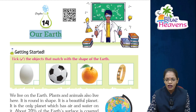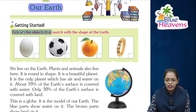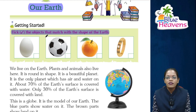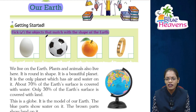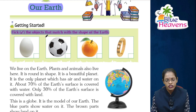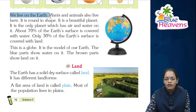Chapter 14: Our Earth. Get started — tick the objects that match the shape of the Earth. Look at the images and find those objects that are similar to the shape of the Earth. The Earth is a sphere shape. First is egg (oval), second is football, third is orange, and last is spangle. The correct answer is orange — the third image.